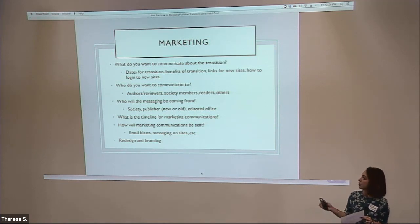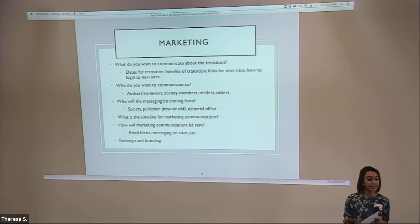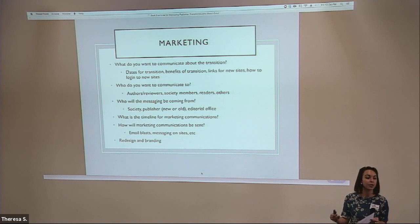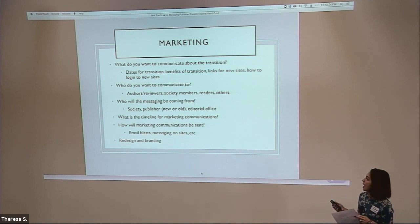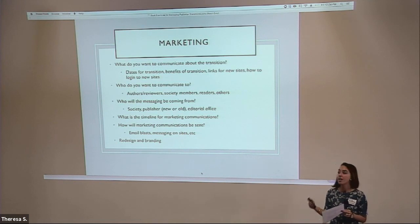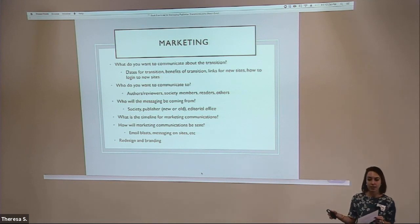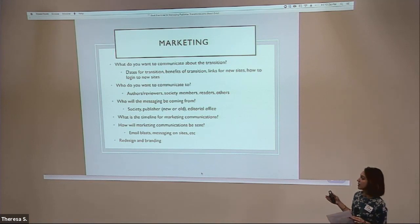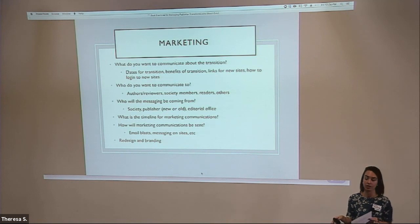If it's really going to make a big difference — for example, if you're changing submission systems — that's something your authors and reviewers need to know about. If you're staying on the same submission system, maybe not. Maybe you're just letting them know there's a publisher transition and the homepage is going to change. Think about how you are going to communicate: email blasts, announcements or messages on the society pages, or updating messages on your submission site. Think about where people will see them so communication can be most effective.